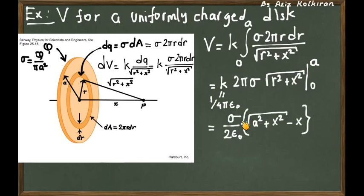So the end result is in terms of the charge density sigma divided by 2 epsilon 0, in parentheses: a squared plus x squared in square root minus x. Here x is the distance of the point in question to the center of the disk, and a is the radius of the disk.